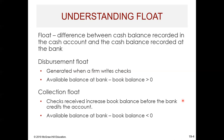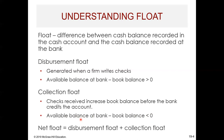The next type is collection float. This is when checks received increase our book balance before the bank credits the account. We go to the mailbox, receive a couple of checks, enter those into our accounting system, and create a deposit. It might take a day or two or three for it to clear the bank, so there's going to be a difference between our book balance and the bank balance. With collection float, the available balance at the bank minus the book balance is less than zero — our book balance is higher than the available balance at the bank.